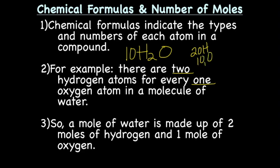You could take that further and say if I had one mole of water, keeping in mind that that's 6.022 times ten to the 23rd, that would mean I would have two moles of hydrogen and one mole of oxygen.